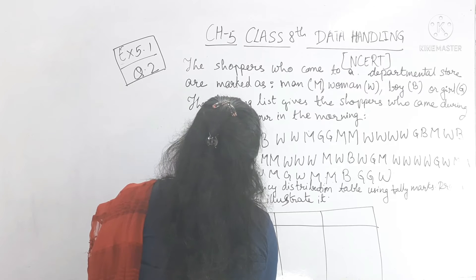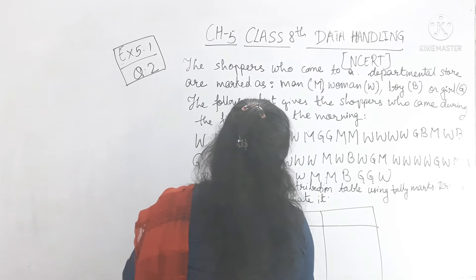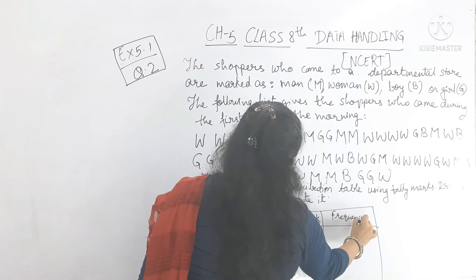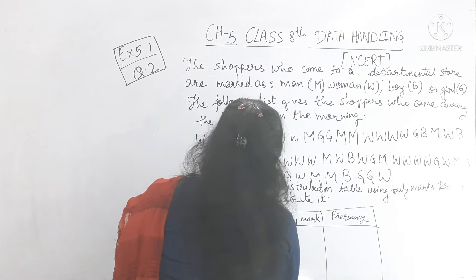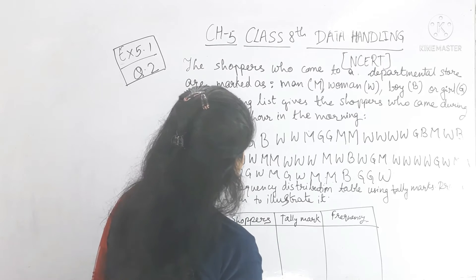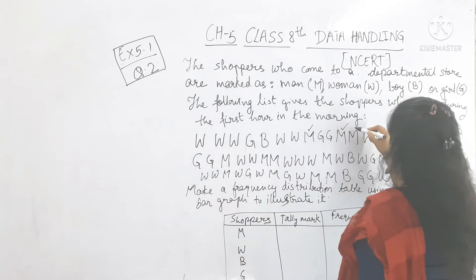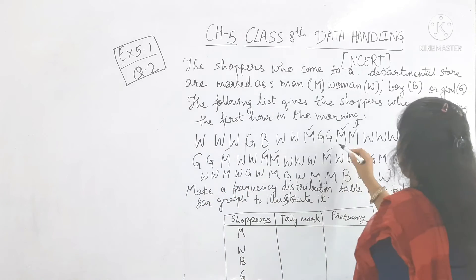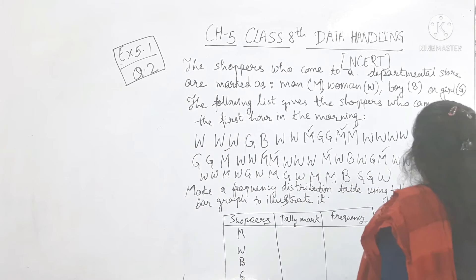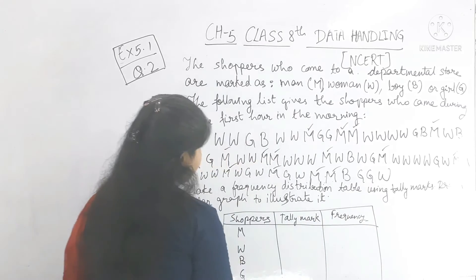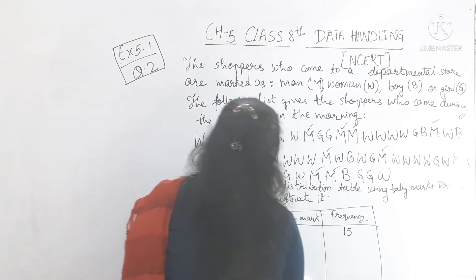The frequency distribution table has columns: shoppers, tally mark, and frequency. Counting the men (M) from the data list gives a frequency of 15.